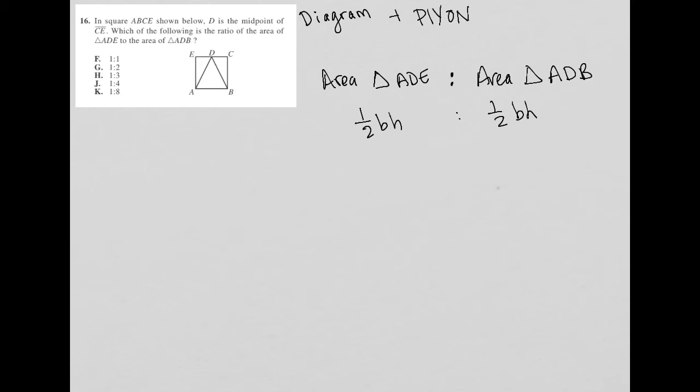So what numbers am I going to choose? Well, the question tells me that ABCE is a square. Here, I am going to say that each of these sides are 4. I'm choosing an even number here. I could have chose an odd number, it's fine. But I'm choosing an even number just because I want these sides, because we know that D is a midpoint, to be even.